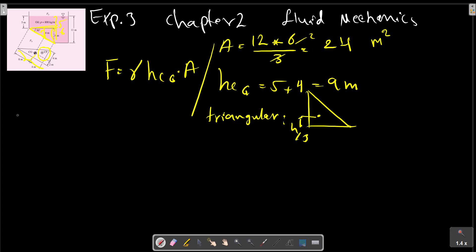So, now we make a country here, 1, 2. So, F equals gamma HCG multiplied by A. Gamma is equal to, as written here, 800 multiplied by 9.